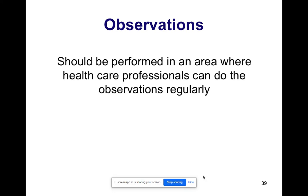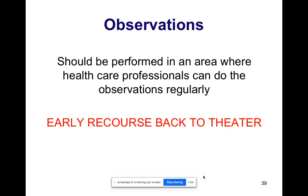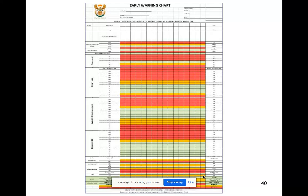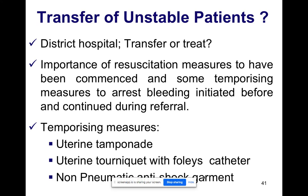Monitoring should be performed in an area where healthcare professionals can do observations regularly. If there is any change, do not hesitate — take the patient back to theatre. This is the early warning chart where you record all the investigations. For transfer of an unstable patient from a district hospital or rural area: start resuscitation and try to arrest the bleeding before transferring. Temporizing measures include uterine tamponade, uterine tourniquet with a Foley catheter, and the non-pneumatic antishock garment — though this is usually used by trauma surgeons rather than in obstetrics.